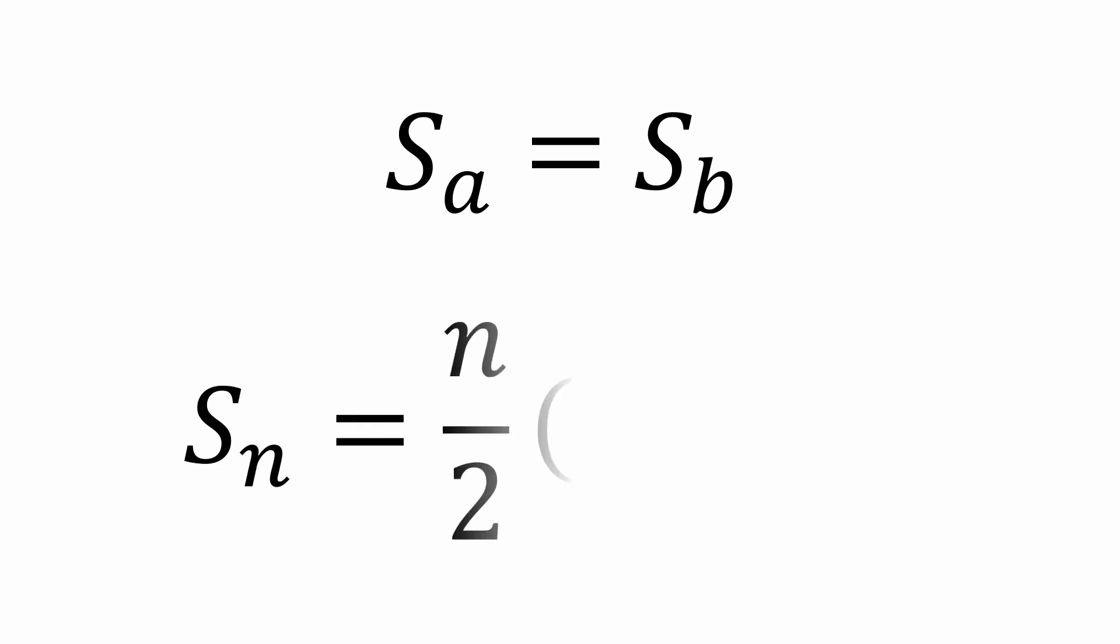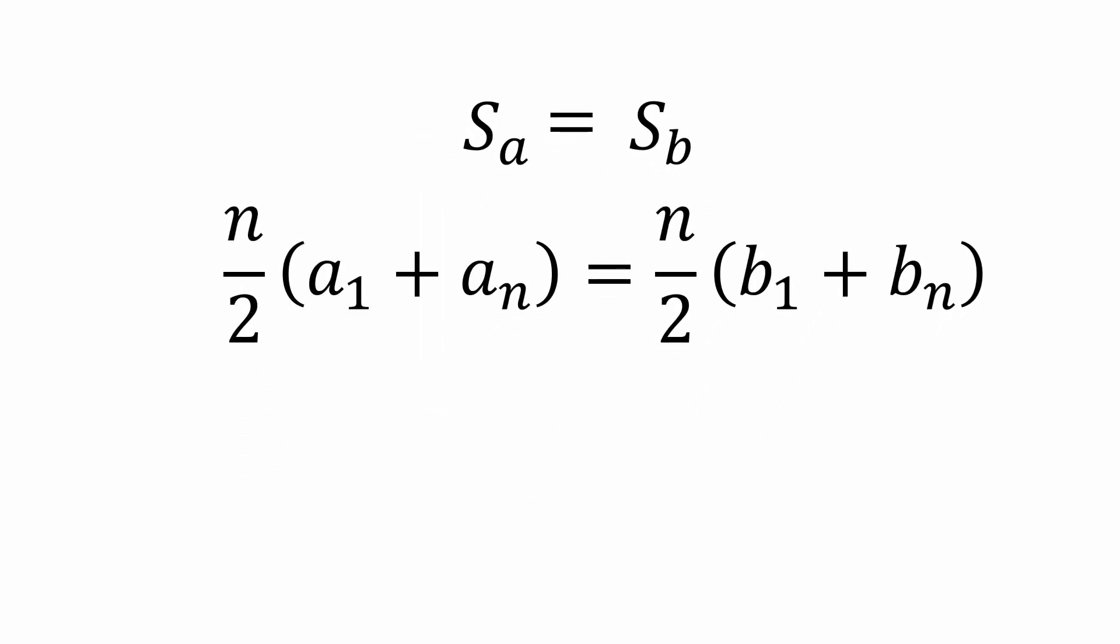Next, we'll use the arithmetic sum formula which states that the sum Sn equals the number of terms n over 2 times the sum of the first term T1 and the last term Tn. Setting these two sums equal to each other using the sum formula, we get the following expression: n over 2 times the quantity A1 plus An equals n over 2 times the quantity B1 plus Bn.